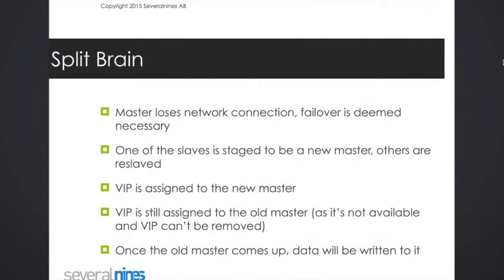So let's assume we have this kind of situation. We have a master, some slaves, we have a virtual IP that's pointing to the master, and the writes are directed to the virtual IP. The master loses network connection, and there is a need for failover.